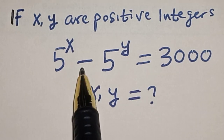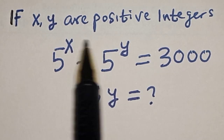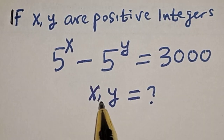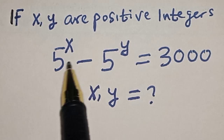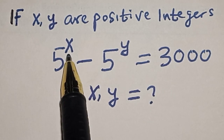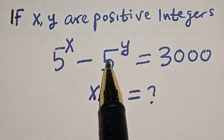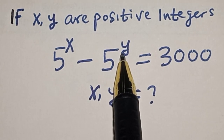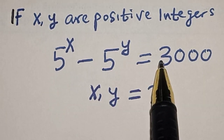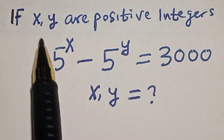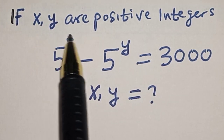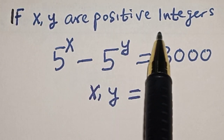Hello, welcome to Math Gist. In this class we want to find the value of x from this equation: 5 raised to power x minus 5 raised to power y is equal to 3000, where both x and y are positive integers.